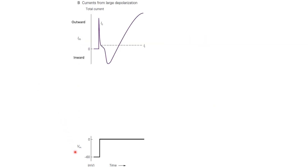Let's do a voltage clamp experiment in which the neuron is first clamped at minus 60 millivolts, the resting membrane potential, and then at some point it is increased to 0 millivolts and clamped there. We already know that when the membrane potential is at the resting membrane potential, the compensatory currents will be zero. Then at the transition from minus 60 to 0 millivolts, we will see a large capacitive current, and then there will be some leakage current depending on the voltage level, but that will be constant.